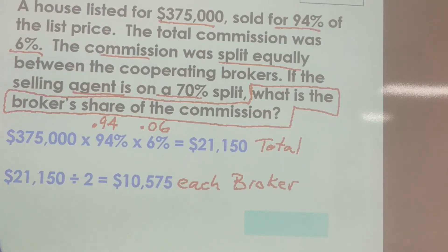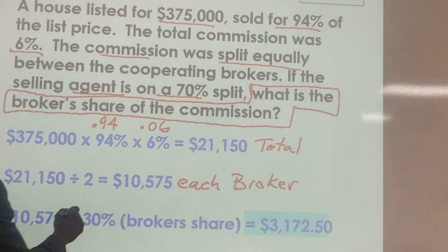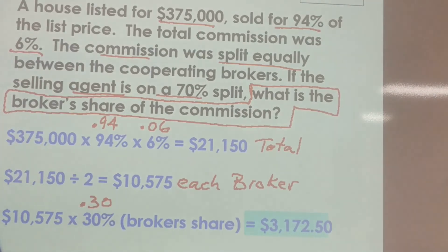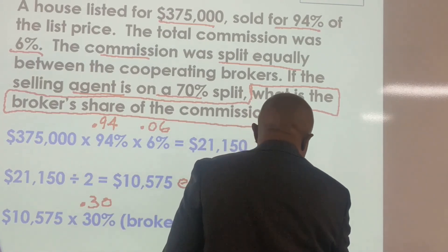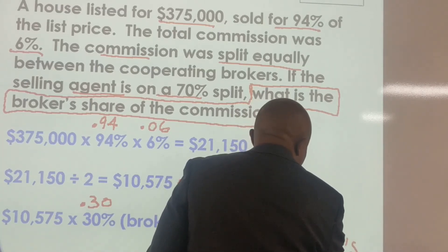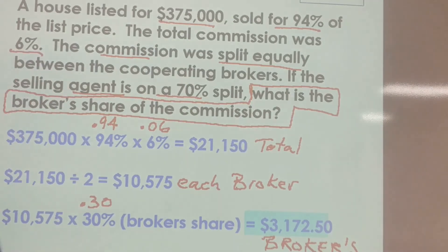We know the agent gets 70%, and they're asking for the broker's share. If the agent gets 70%, the broker gets the remaining 30%. So we take $10,575 and multiply by 30% — entered as .30 on the calculator. The broker's share of the commission is $3,172.50.